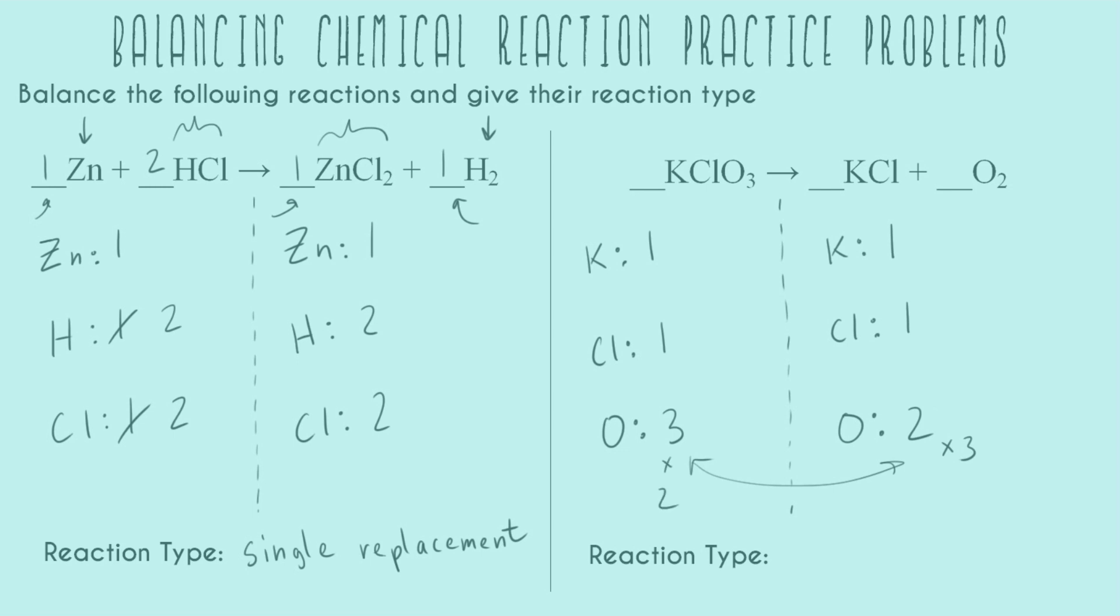So putting those coefficients in there we have and now let's see what we have. Now we have two potassiums, two chlorines, six oxygens, we have one potassium on the right hand side, one chlorine on the right hand side, and we have six oxygens. So now all we have to do is balance potassium and chlorine on the right hand side. We can do that by putting a two right here and now we're completely balanced. And this reaction goes from having one molecule to having two molecules. So this is a decomposition reaction.